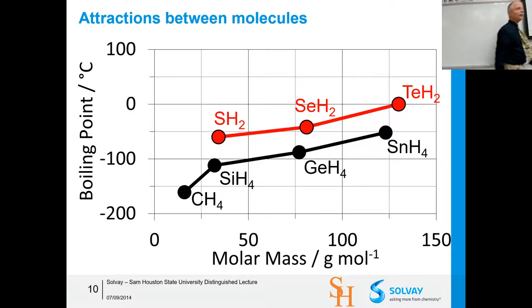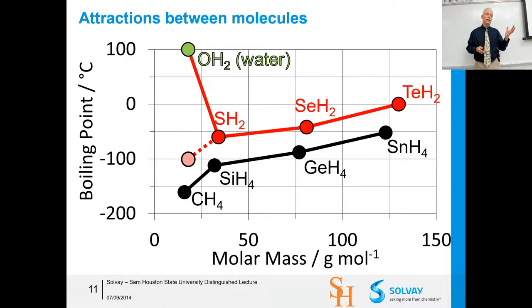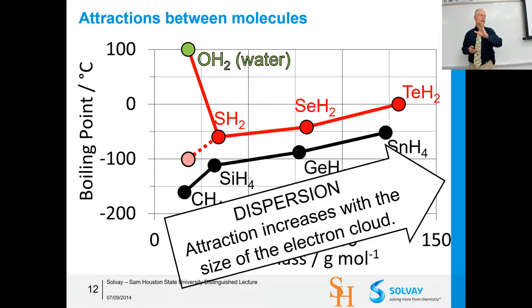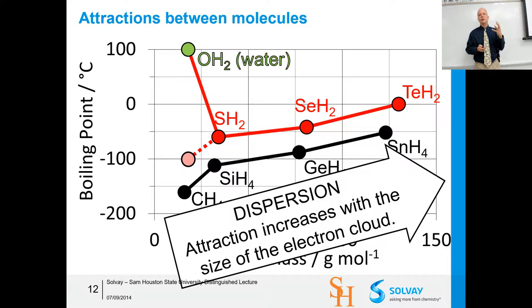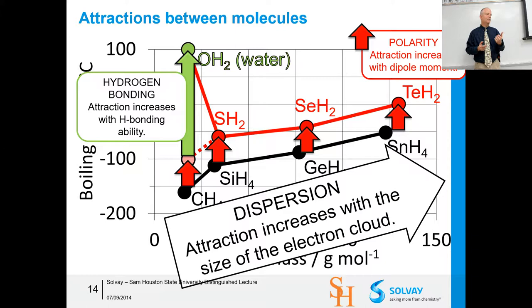If you look at this trend and just extrapolate where water would fall, you'd expect it right here in the lower range — but it's not. Water should boil, based on its mass and polarity, at about 100 degrees below zero Celsius. That's pretty amazing and really illustrates how unbelievably different water is. The increase in boiling point related to molecule size reflects the size of the electron cloud — those instantaneous dipole moments keep them condensed.